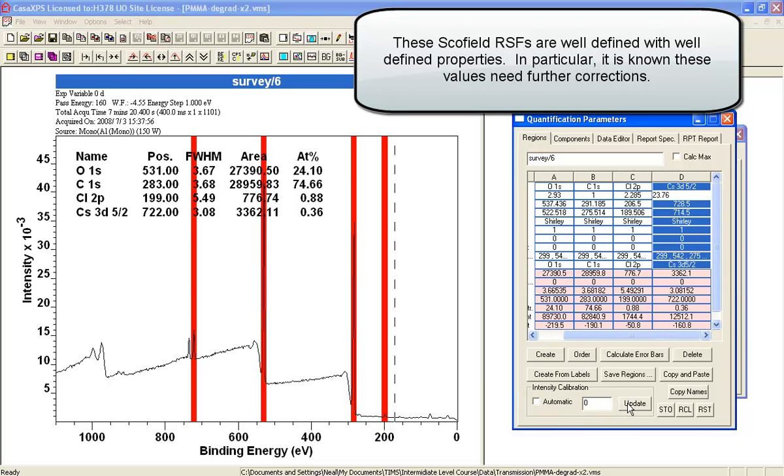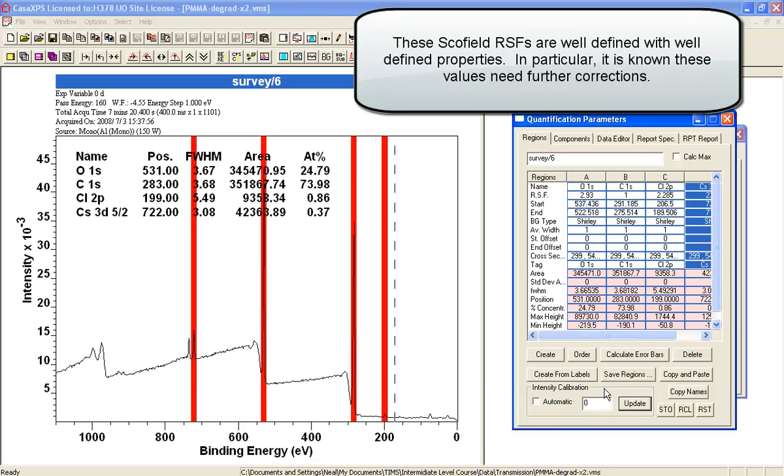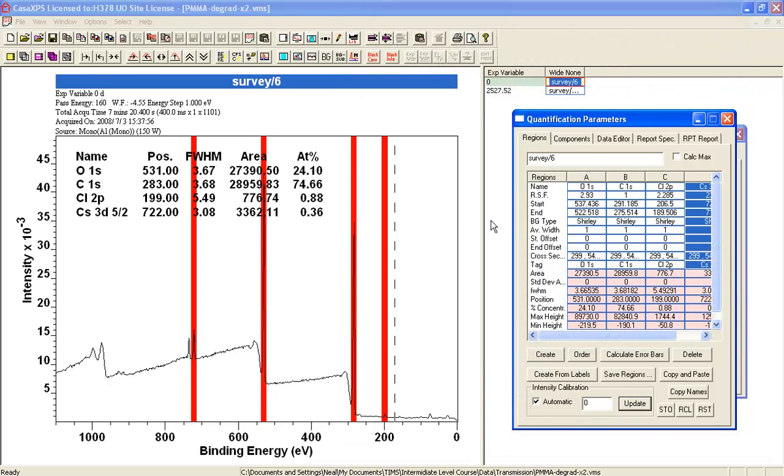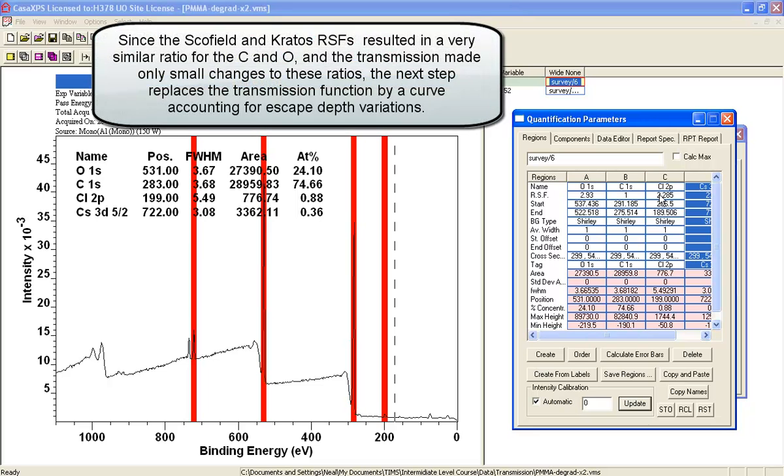The value hasn't changed a great deal. If we take off the transmission function, you can see that again there's some change but not a lot. The Schofield cross sections and the values entered by the Kratos library are doing something very similar.